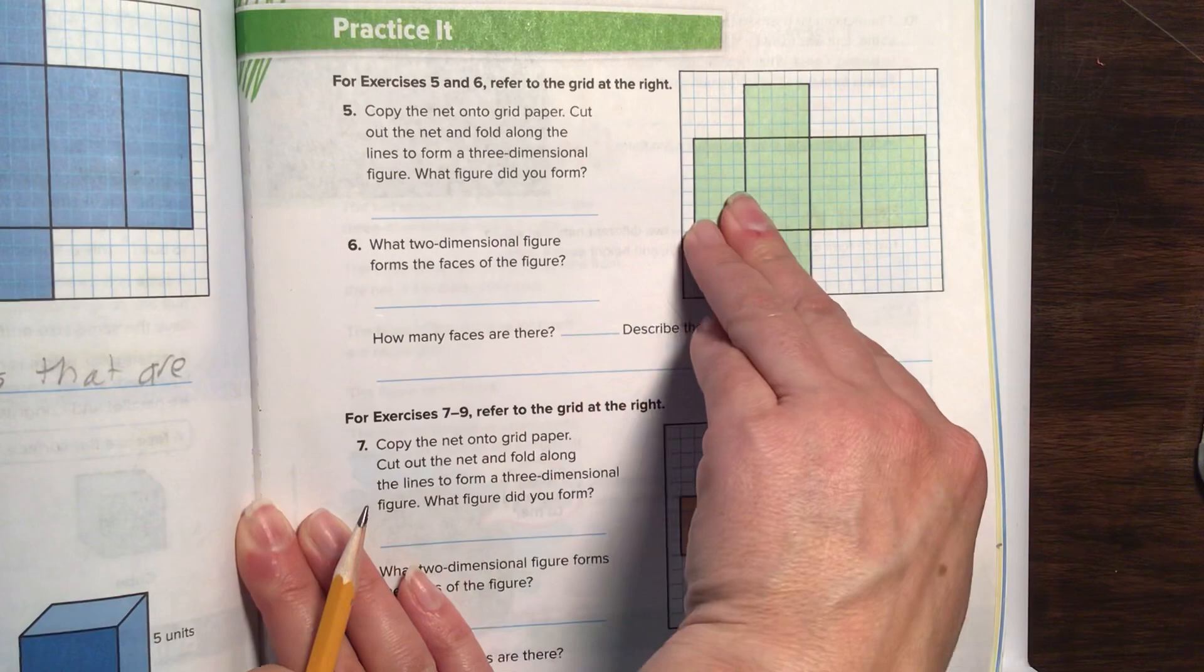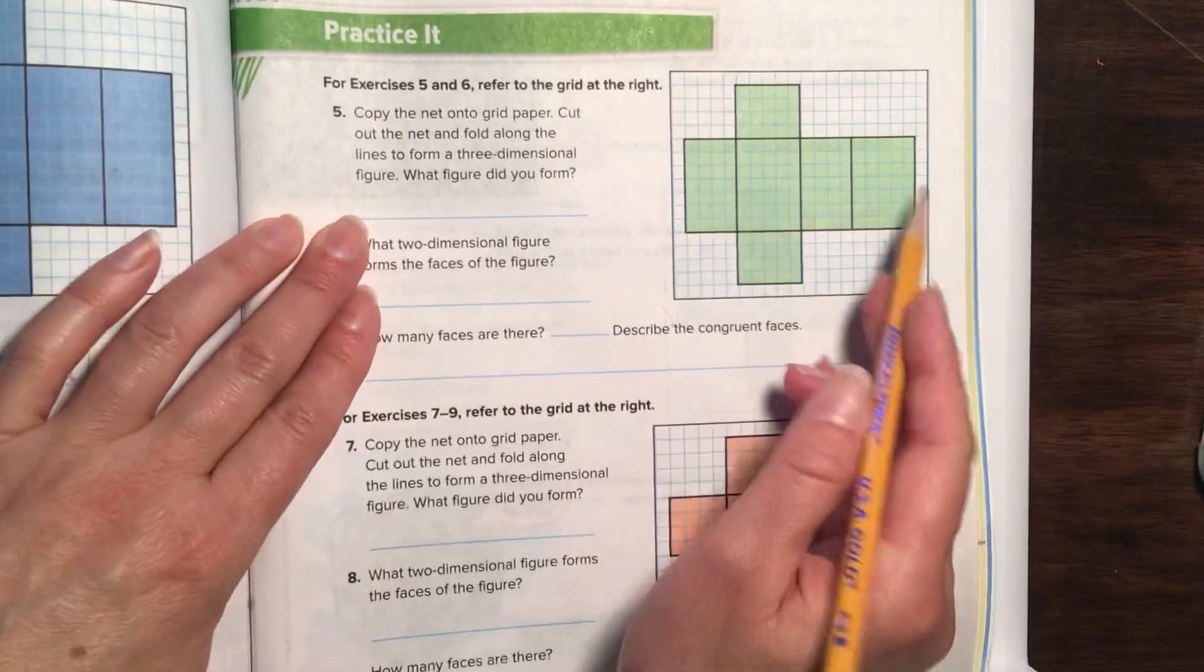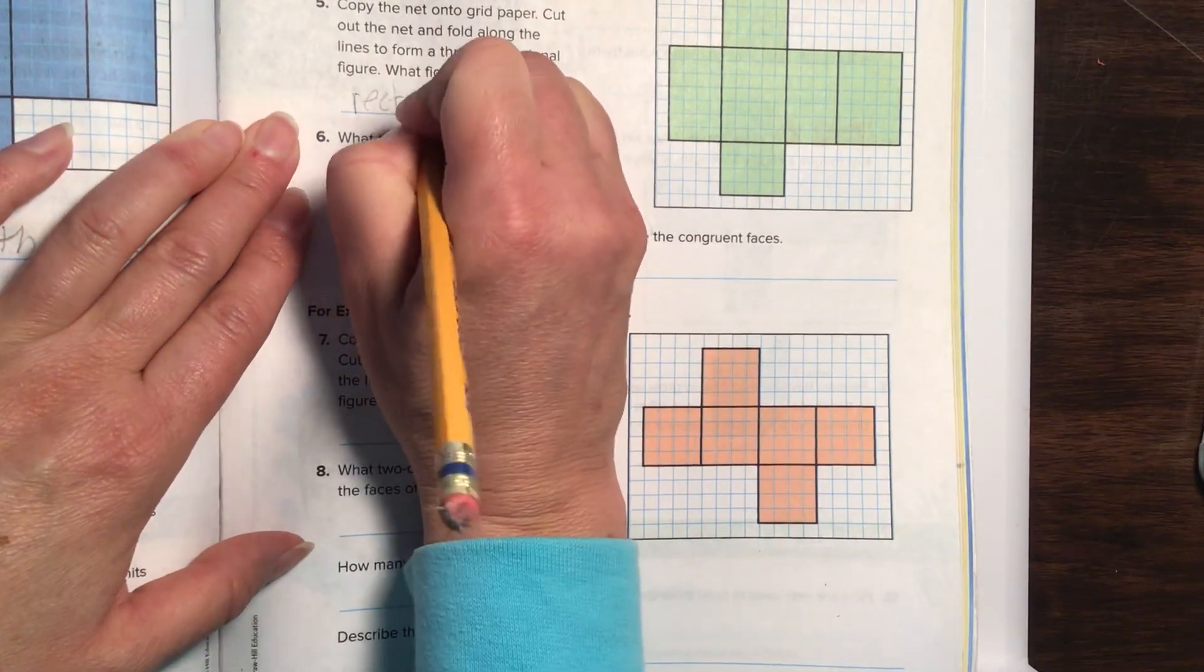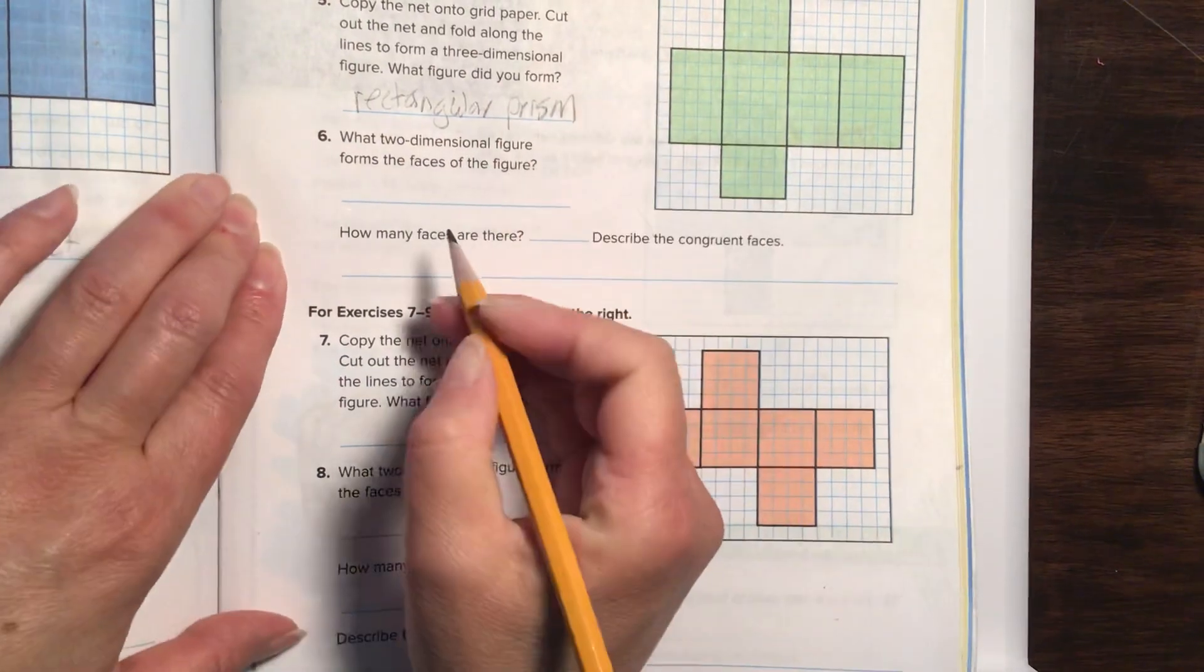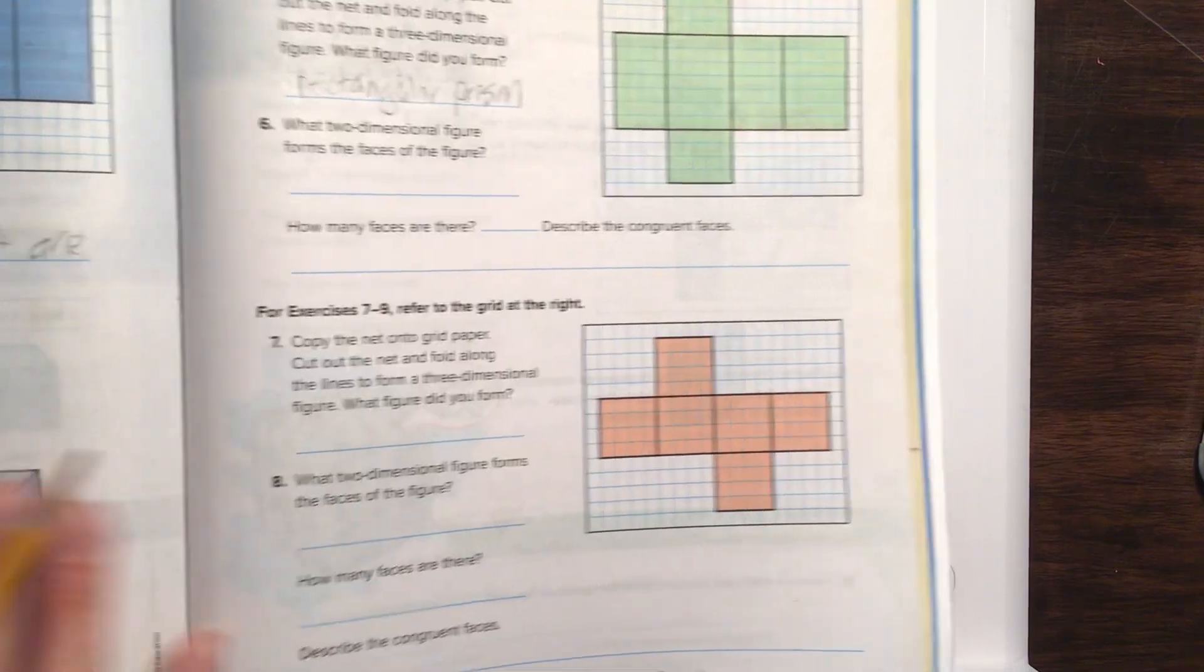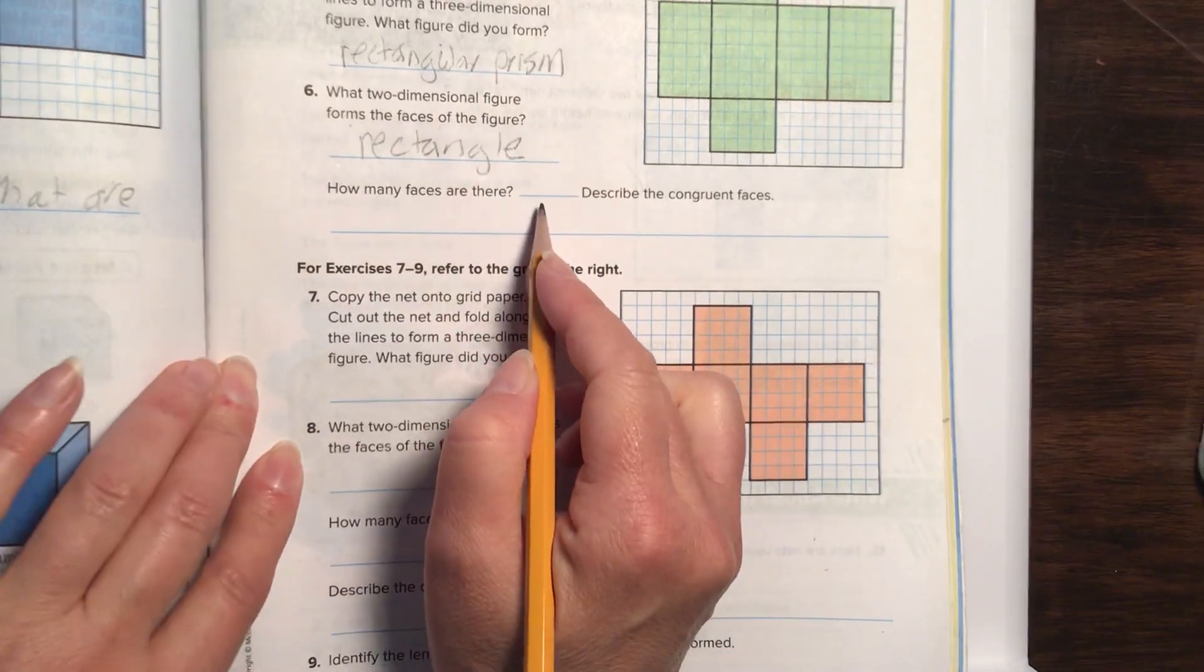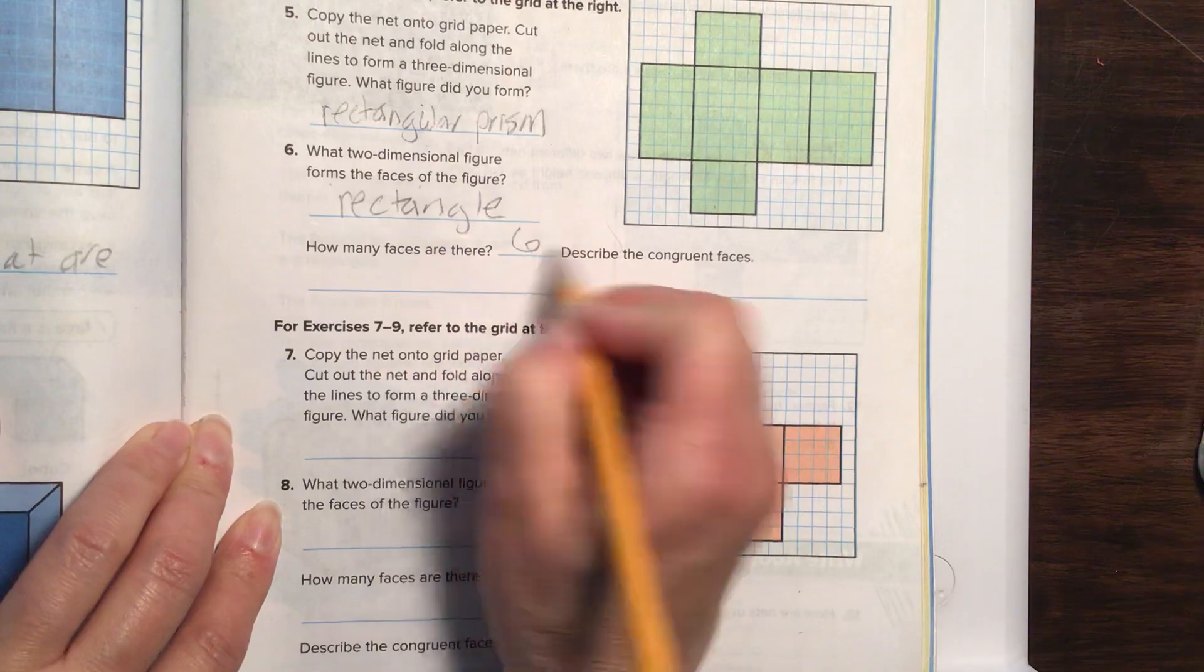Number five. Copy this onto a grid paper, which we're not going to do because we're just going to work on it together as a class. And it wants you to cut along and fold along the form. If you were to fold this together, what would you form? Looks pretty similar to what we had here on the first page. And it forms a rectangular prism. Good job. What two-dimensional figure forms the face of the figure? So, if we were to fold this all together, what shape is the face or the top part? It's going to be a rectangle. So, how many faces are there? One, two, three, four, five, six. Right? There you go. So, describe the congruent faces.